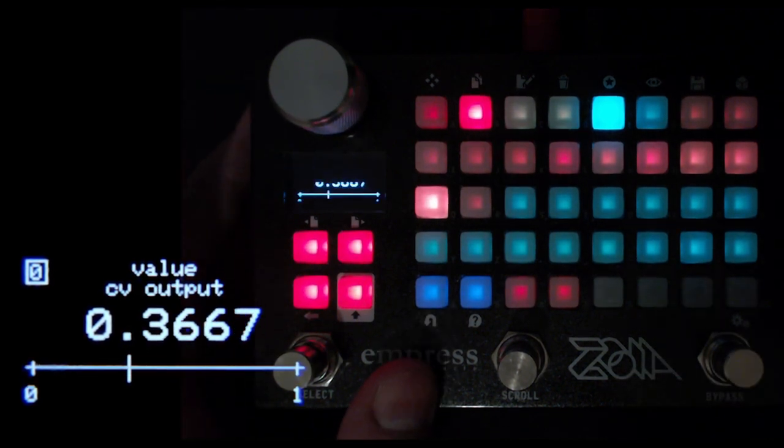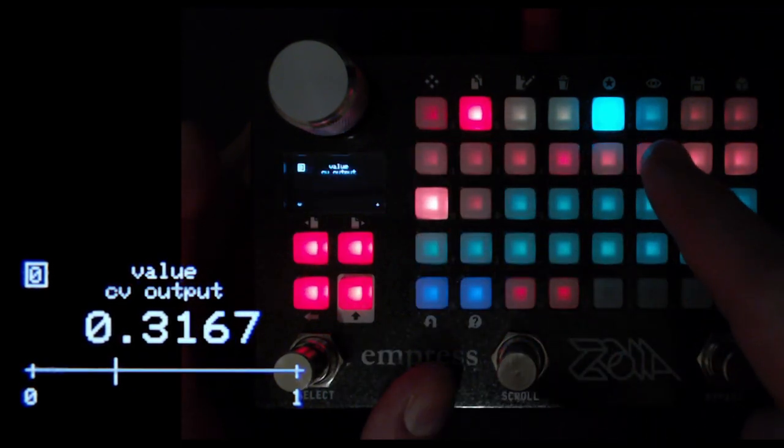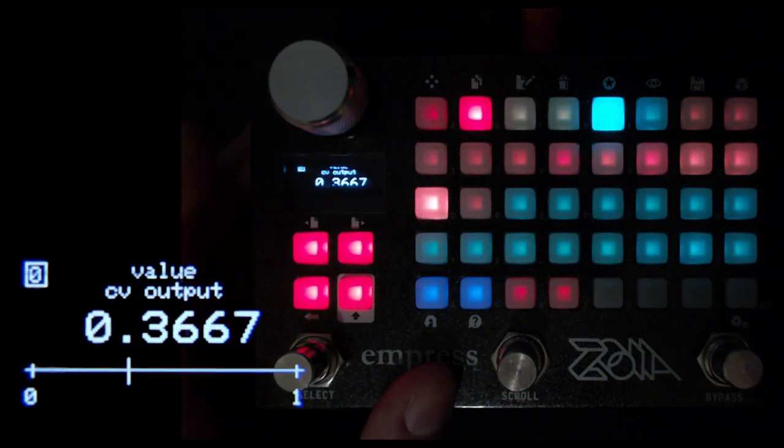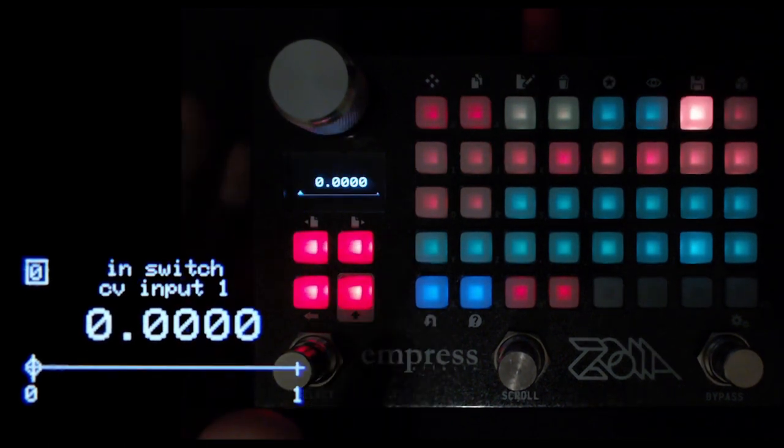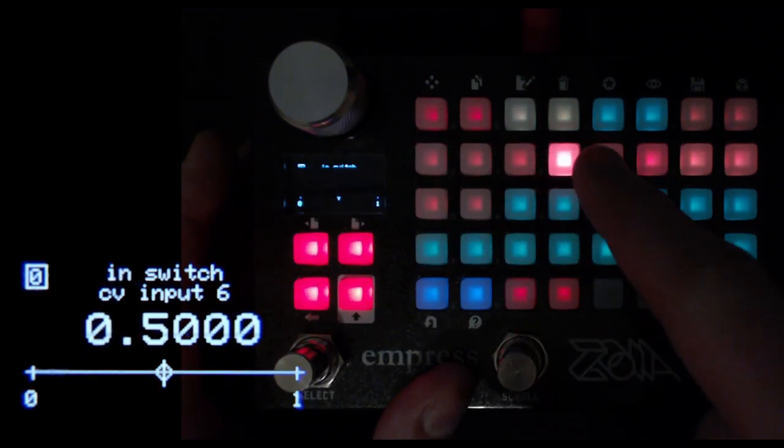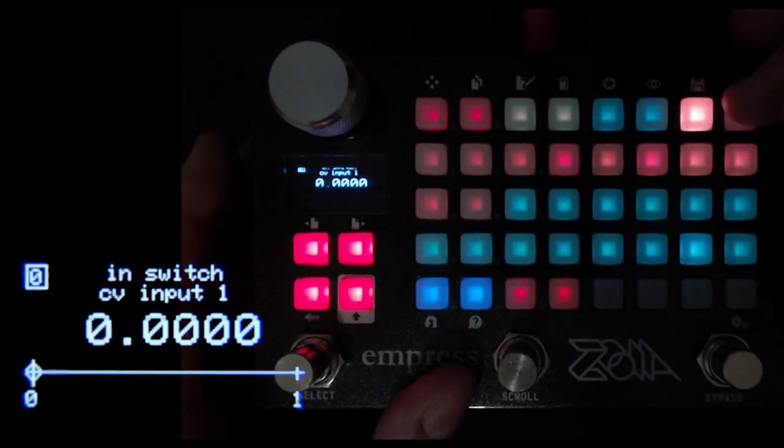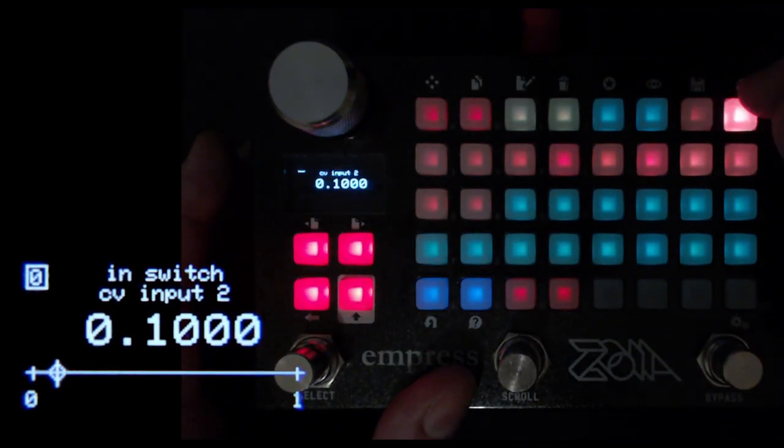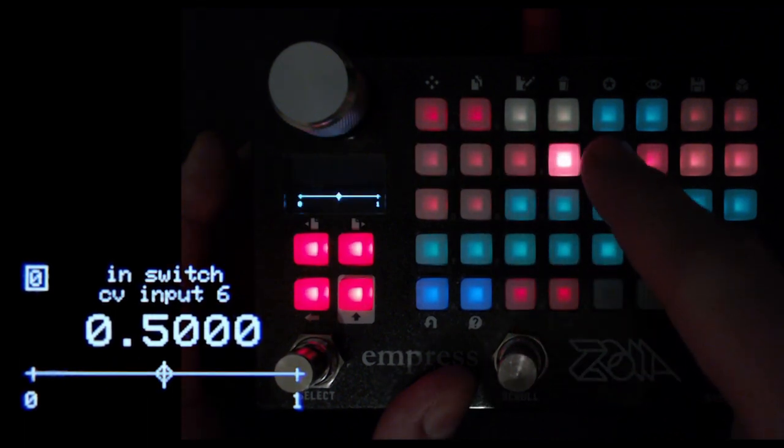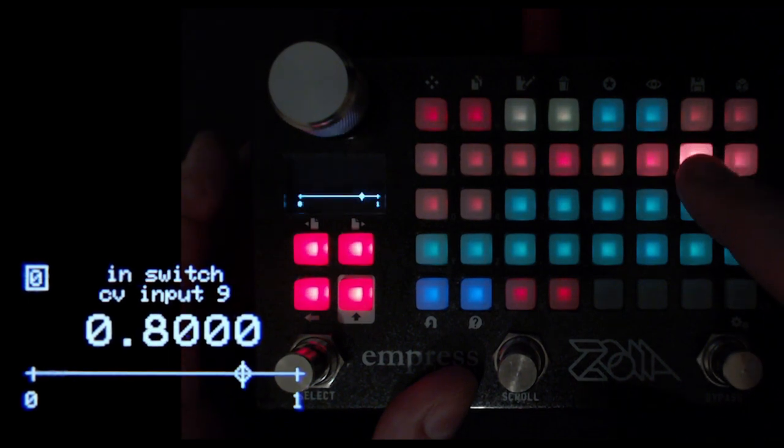An in-switch takes a number of different inputs. You can select how many, up to 16 in one switch, and they can have different values. This one says 0.1, 0.2, 0.3, 0.4, 0.5, etc. And those are the values that are sent out of the in-switch.